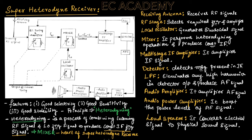The audio amplifier amplifies the audio frequencies to the required amplitude level. Then the audio power amplifier boosts the power levels of the amplified AF signal to a power level suitable to drive the loudspeaker.